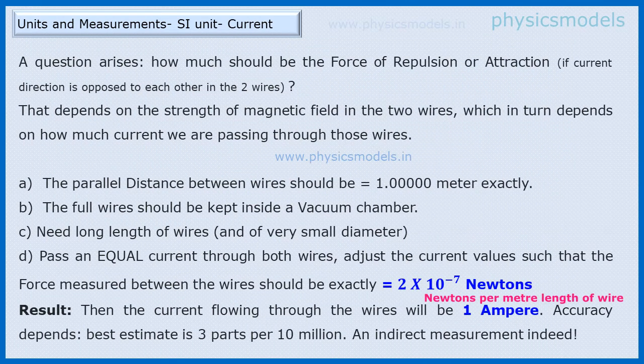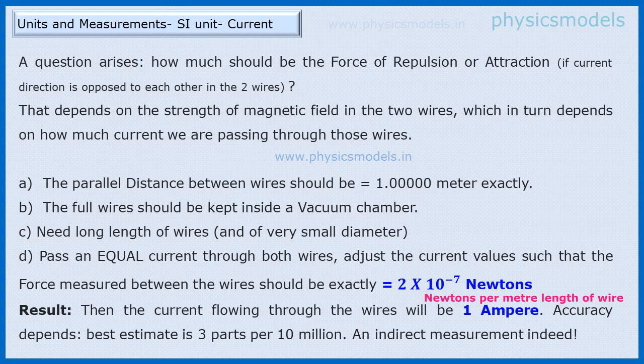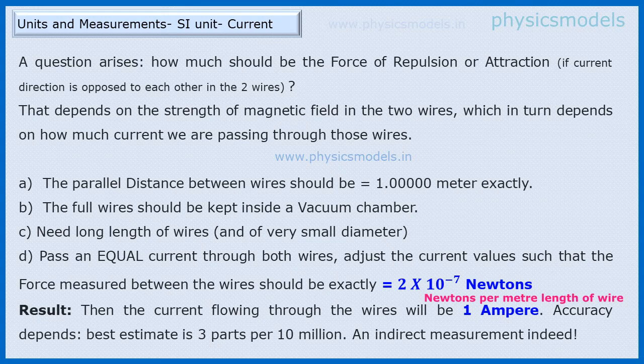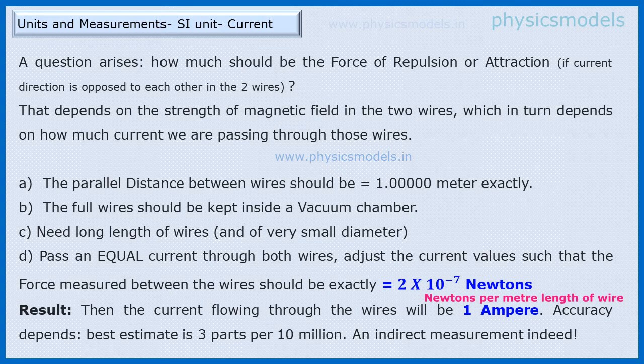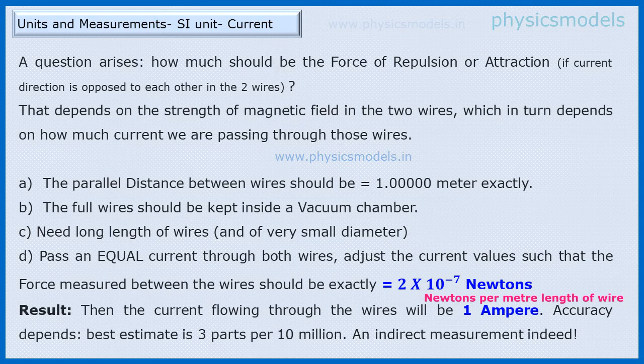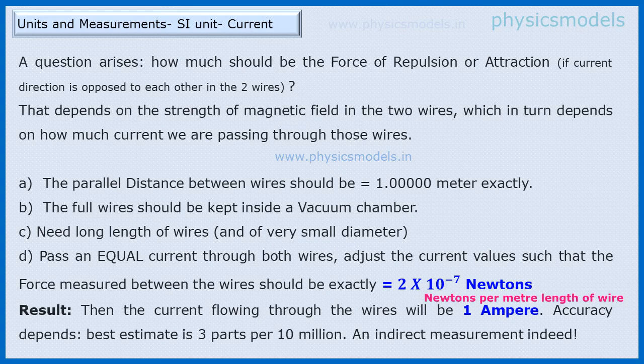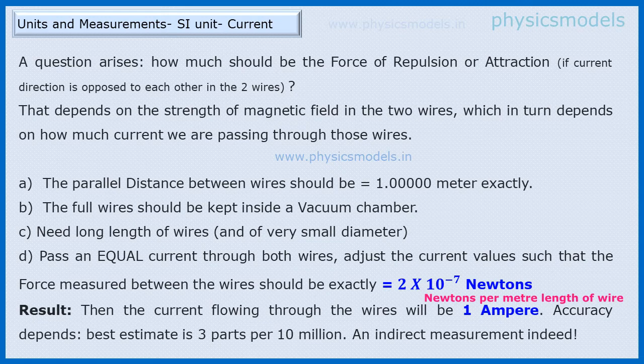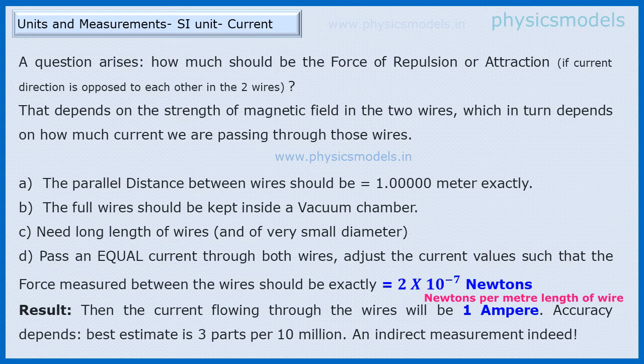The next complicated question is what do we do with this force. It could be repulsion or attraction - that's not a problem, that will happen depending upon whether you pass the current into the plane of paper or the current is coming out of the plane of paper. But looking at the magnitude of the force, the SI definition said that should be managed to be exactly equal to 2×10^-7 Newtons per meter length of wire. So if it's 2 meters you have to multiply by 2, if it's 3 meters long then you multiply by 3. And they said that once you get that force between the two wires, it means that you are passing exactly 1 Ampere through the wires.